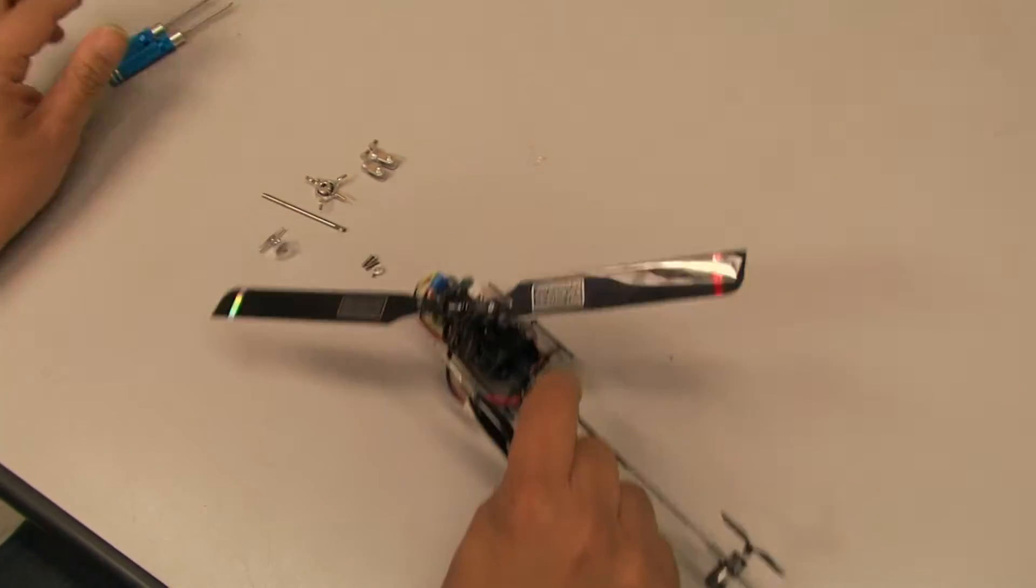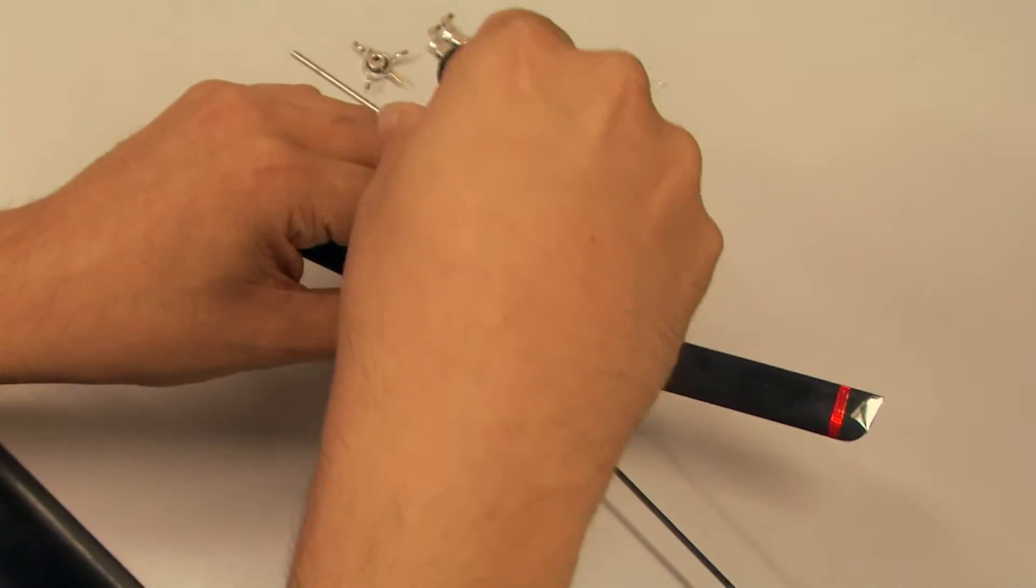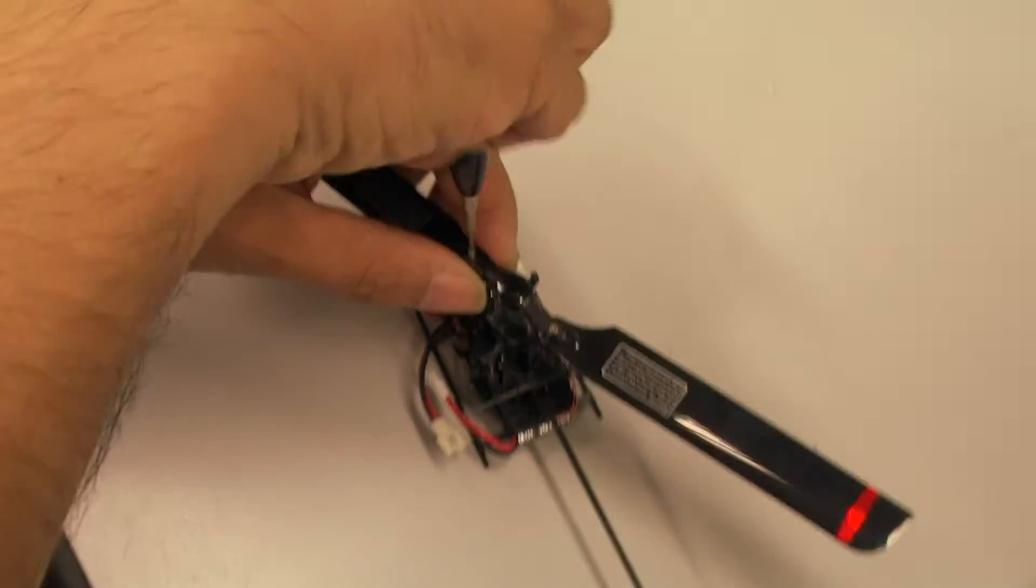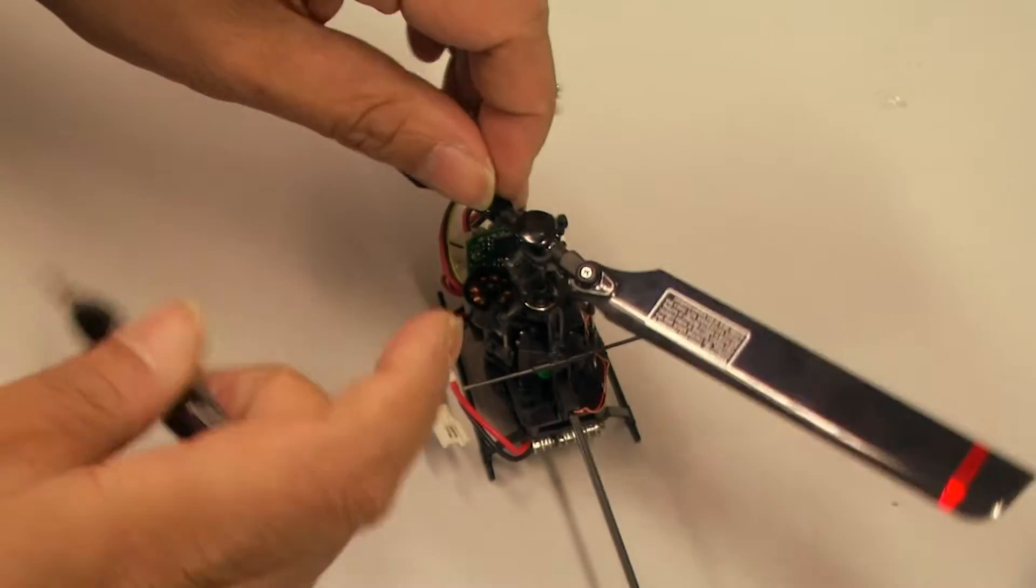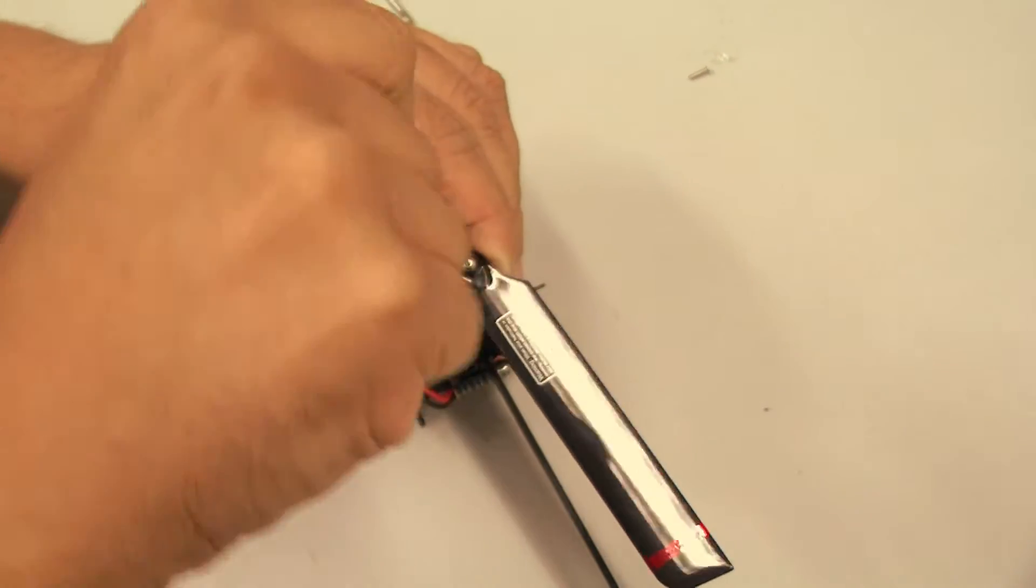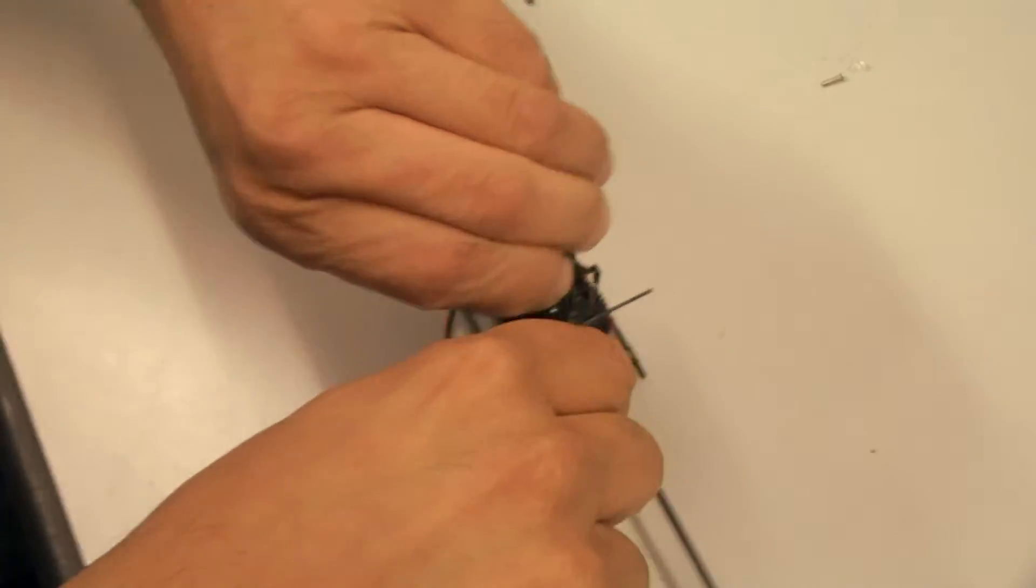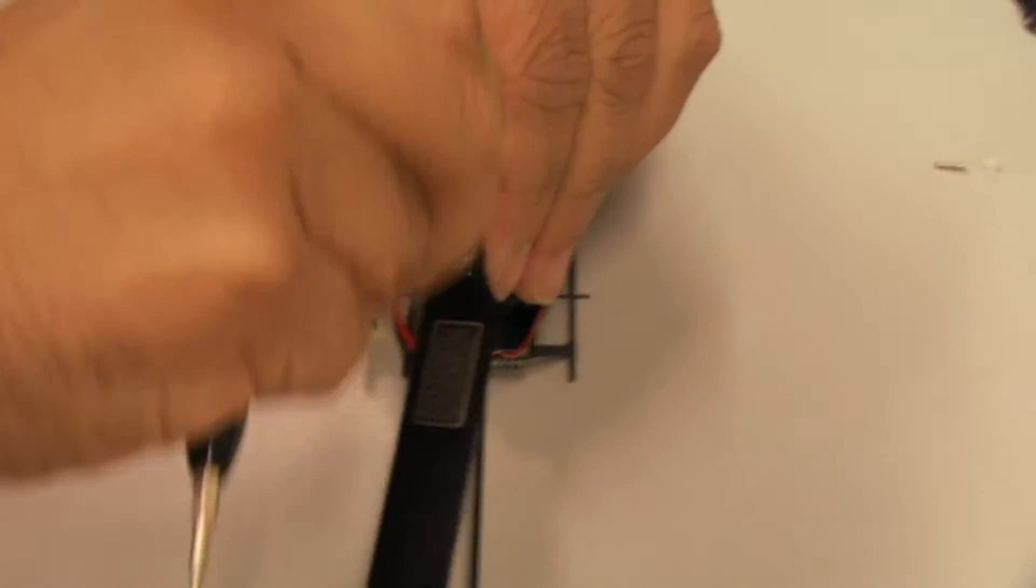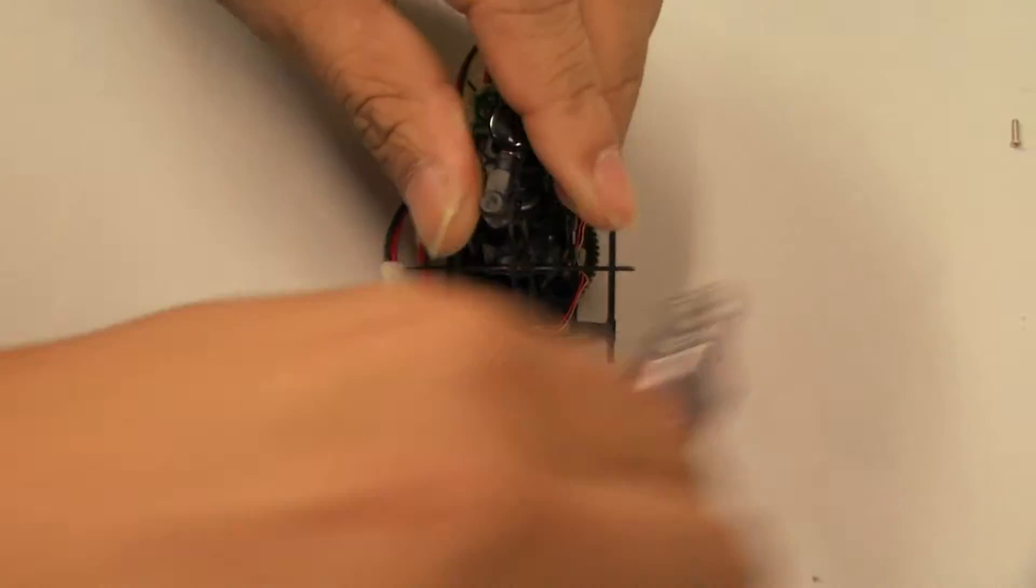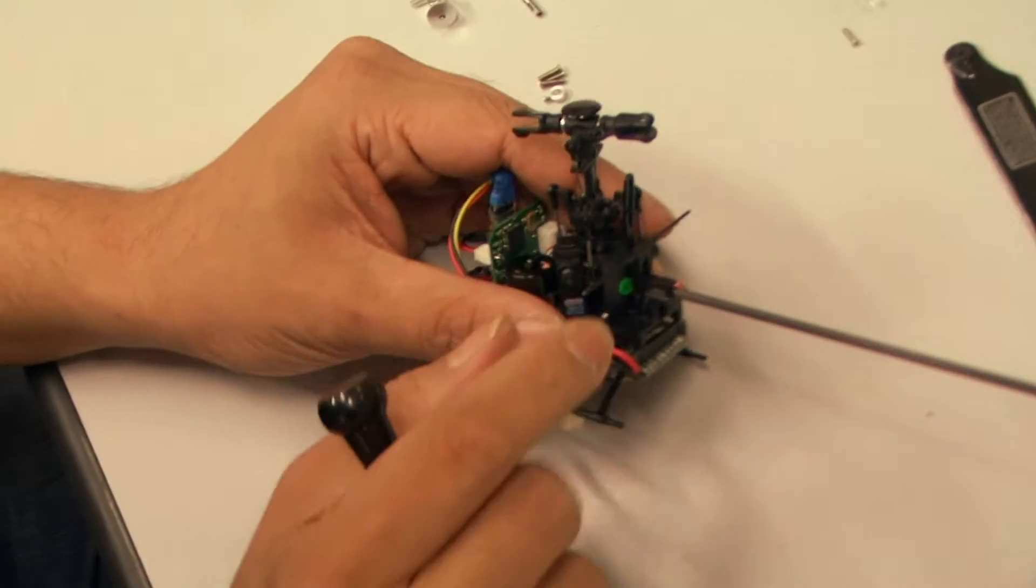Okay, first of all, we remove the main blades and remove the three linkages connecting the swash plate to the servos.